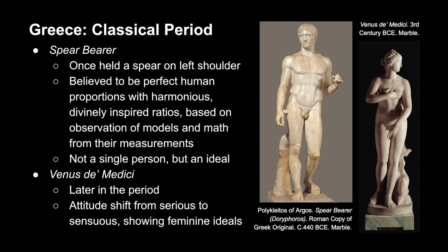On the right we have the Venus de' Medici. This sculpture was created later in the period, and looking at the difference between the two, we can see an attitude shift. Whereas the Spear Bearer is more a serious celebration of the human form, the Venus' tone and attitude is far more sensuous. It shows the female ideals, but it also looks like we've walked in on something we weren't supposed to see, because she's trying to cover up. There's more of an interaction between the viewer and the sculpture, because she's responding to our gaze.